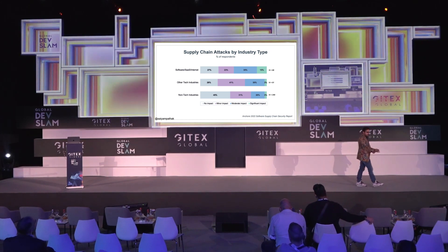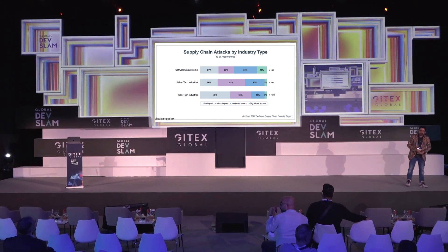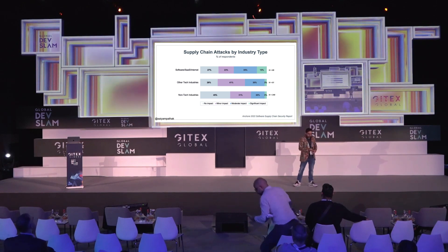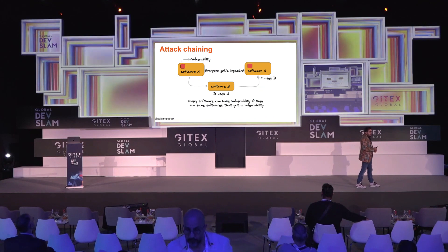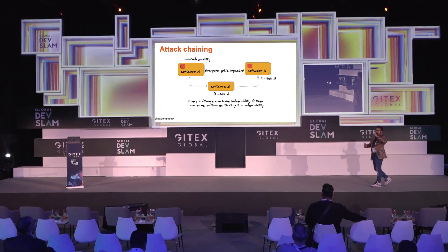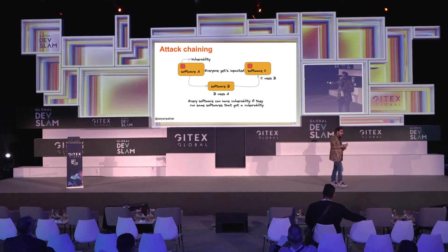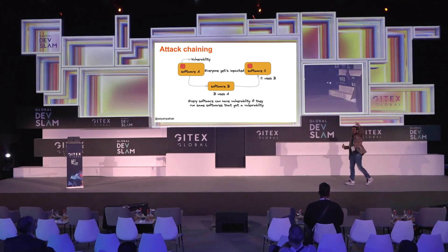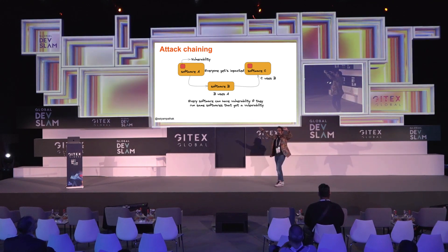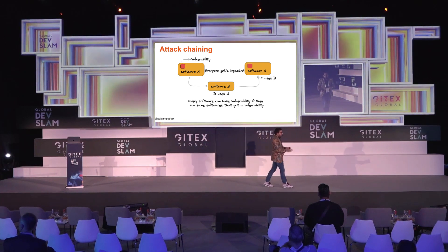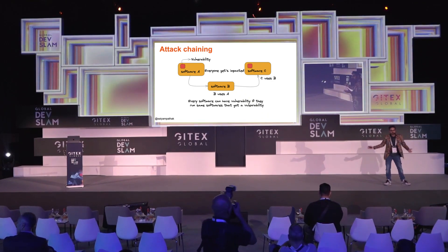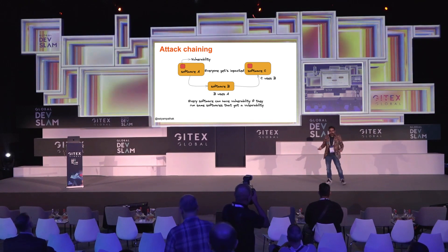By industry type, another report by Anchore from 2022 surveyed 400-plus people. You can see the number of attacks within just that segment of industries — those saying they are impacted, moderately impacted, or not yet impacted. Attack chaining is a key concept: when your software uses a third-party library that has a vulnerability, and Software B uses Software A, and Software C uses Software B — the vulnerability found in Software A propagates through B and C. You might be using a very good piece of software and not know it's using a library exposed to an exploit.